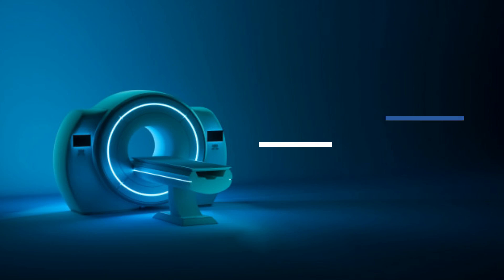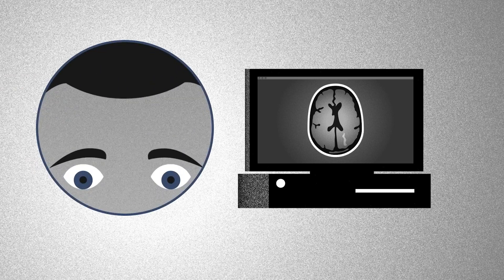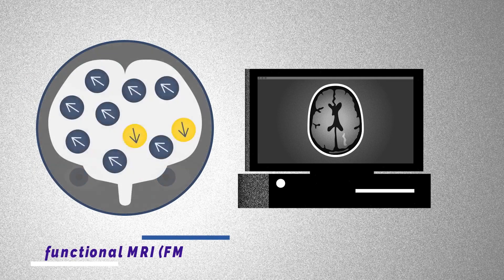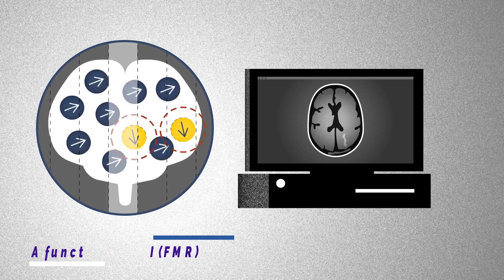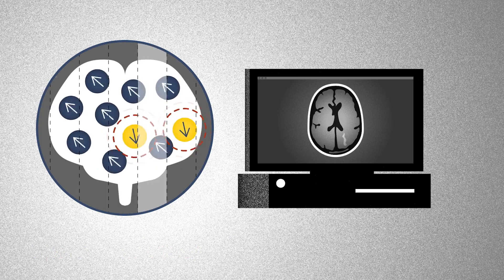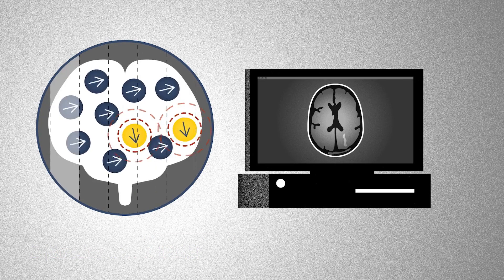Let's look into different types of scans in the MRI system. There are a variety of different MRIs available. The most common MRIs include functional MRI. A functional MRI, or fMRI, tests brain activity.